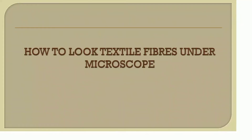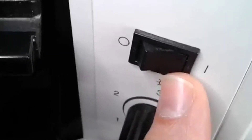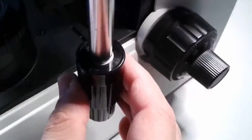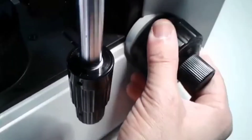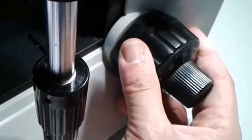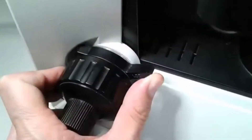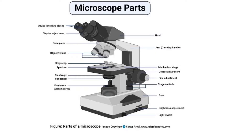Let's watch a sample video of how to set up a textile fiber in the microscope. First, turn on the machine, fix the objective lens over the slide, then adjust the slide, and adjust the magnifying power. You can also move the slide up and down. For a detailed microscope setup and its parts and functions, please go through the link in the description below.